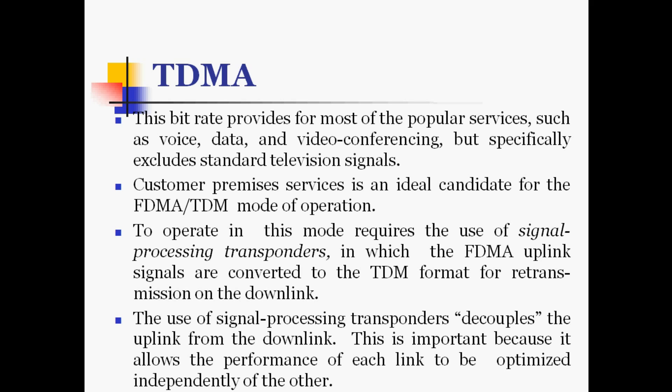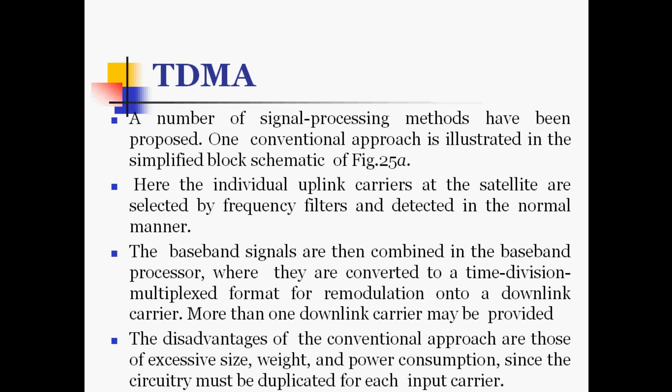Customer premises service is an ideal candidate for the FDMA and TDM mode of operation. Operating in this mode requires signal processing transponders in which the FDMA uplink signals are converted to TDM format for retransmission on the downlink. The use of signal processing transponders decouples the uplink from the downlink, which is important because it allows the performance of each link to be optimized independently of the other.